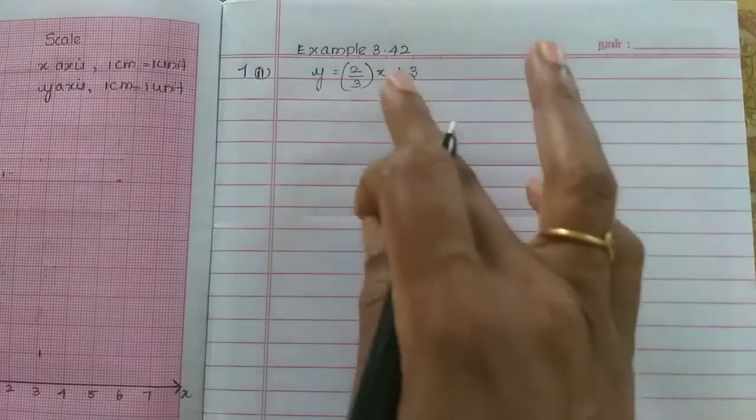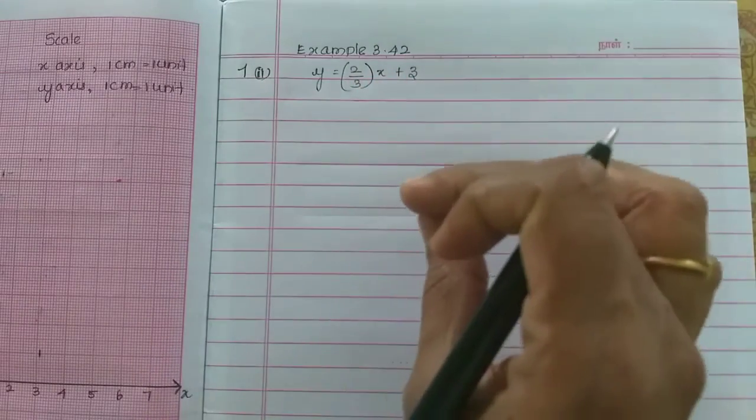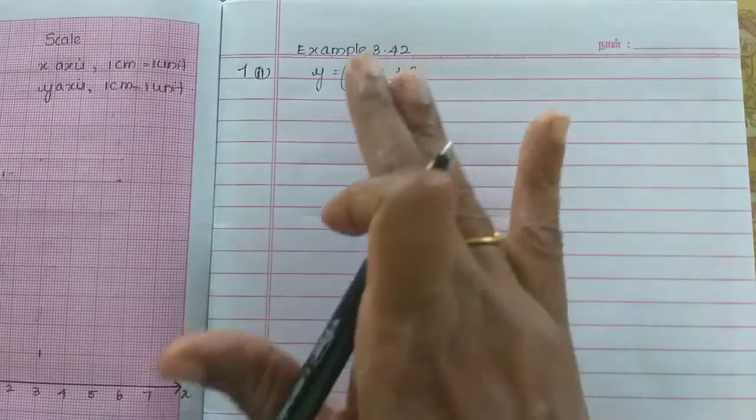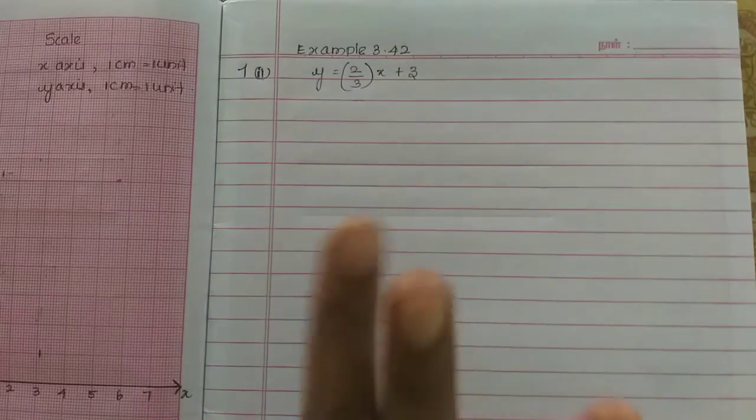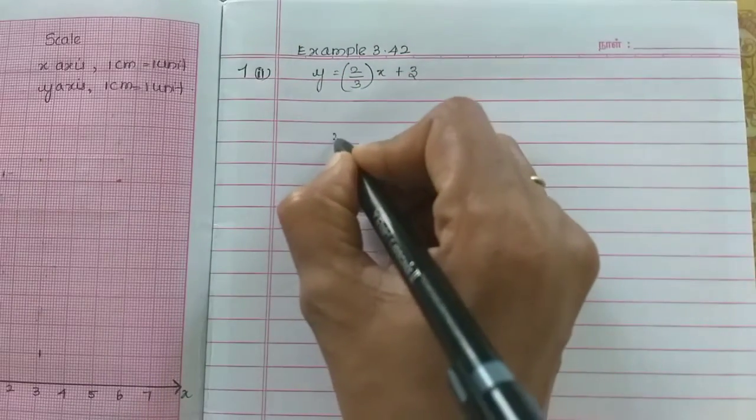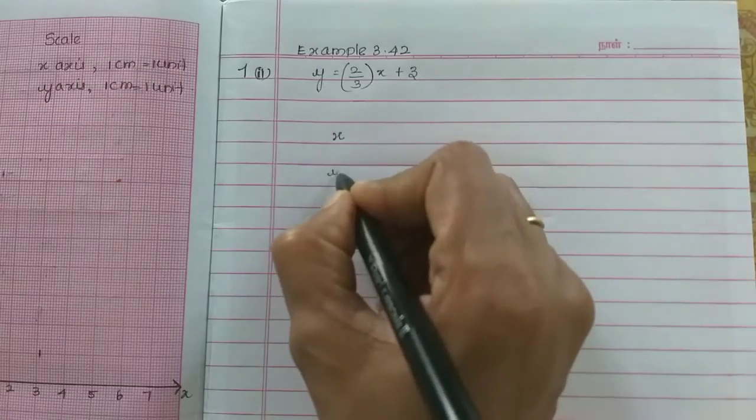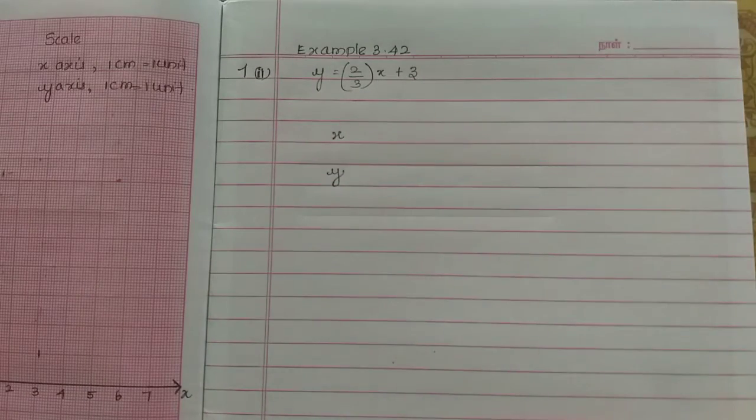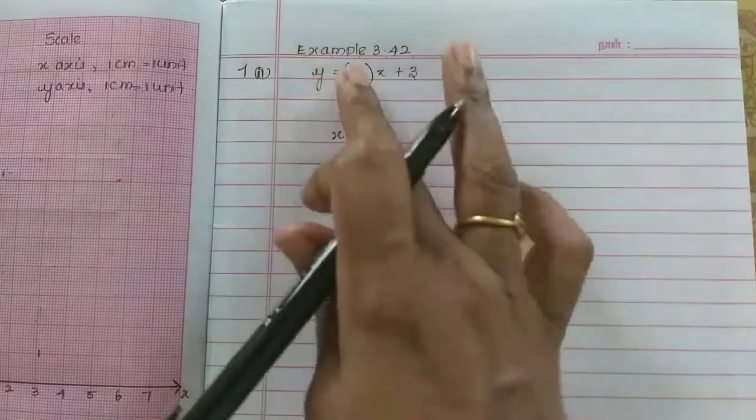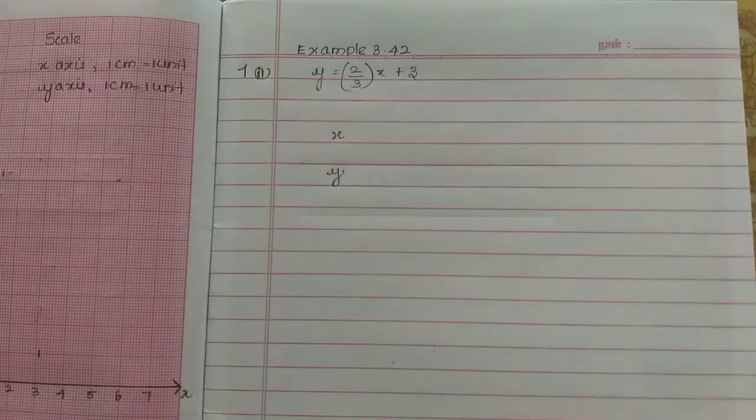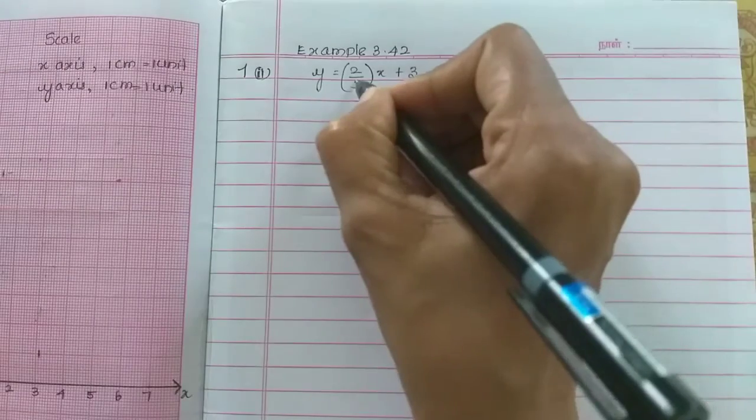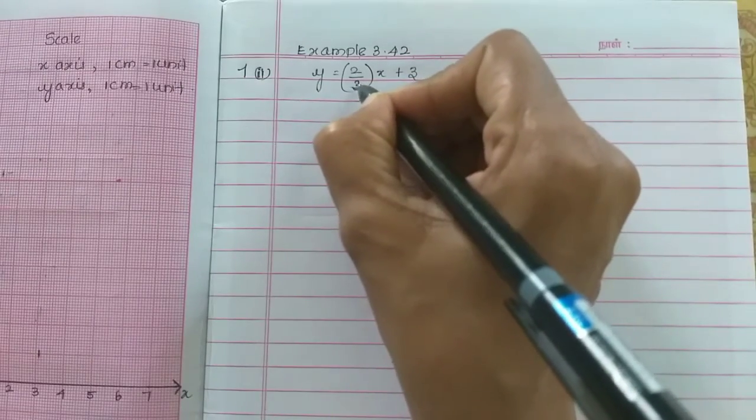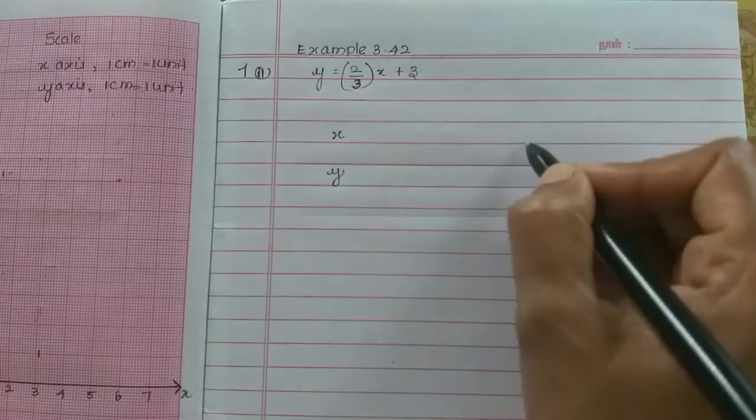In previous time, we had a whole number which was very simple. Here we have a fraction. So we have to fix the y value by choosing the x value as a fraction. This is very simple. What number is in the denominator? 3. Choose multiples of 3.